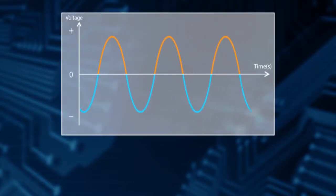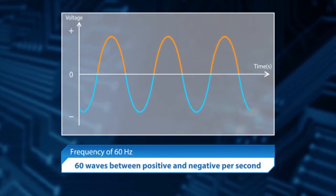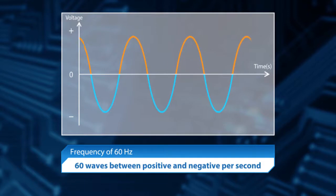Frequency values are usually shown in a graph like this. For example, frequency 60 hertz means that there are 60 waves between positive and negative per second.